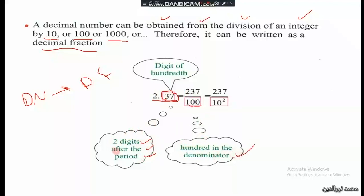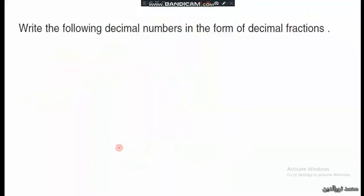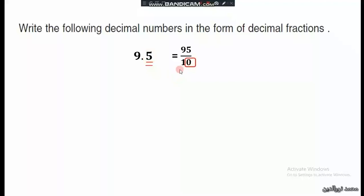More practice — write the following decimal numbers as decimal fractions. Here we have one decimal digit, so one zero, so it's ninety-five over ten. We have one decimal digit so one zero: over ten.